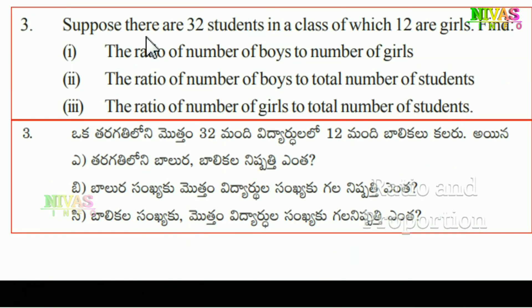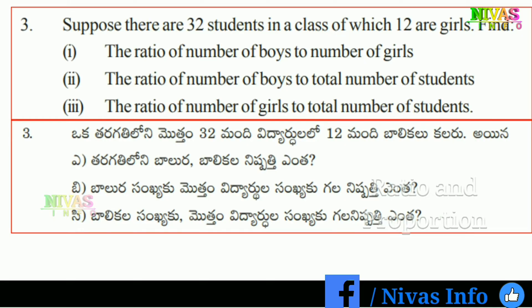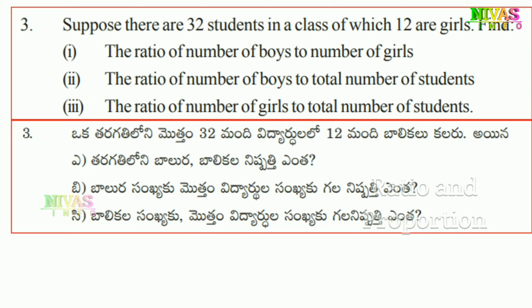Next question, third one: suppose there are 32 students in a class, of which 12 are girls. Find the ratio of number of boys to the number of girls, the ratio of boys to total students, and the ratio of girls to total students. Total students are 32, girls are 12, so boys are 20.